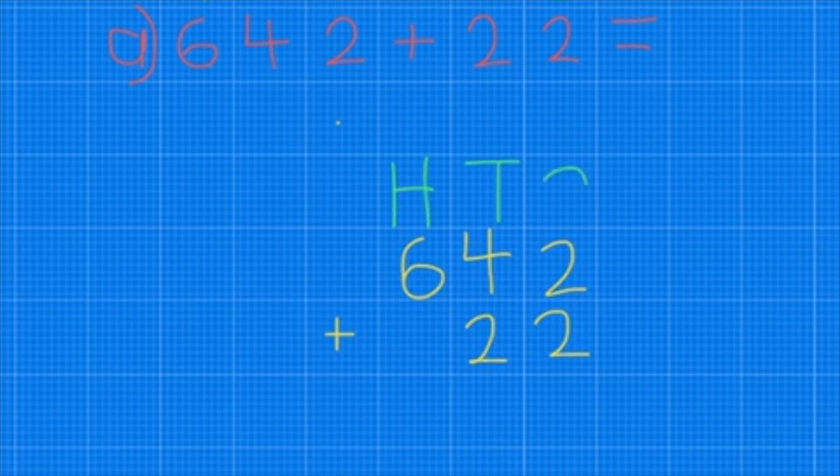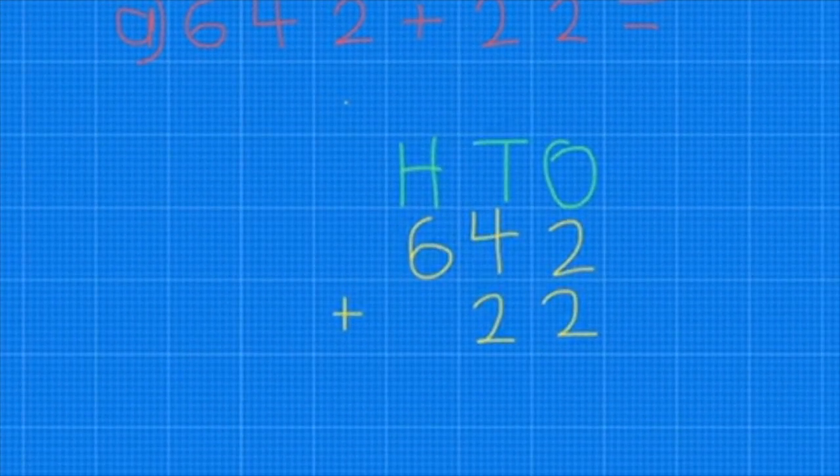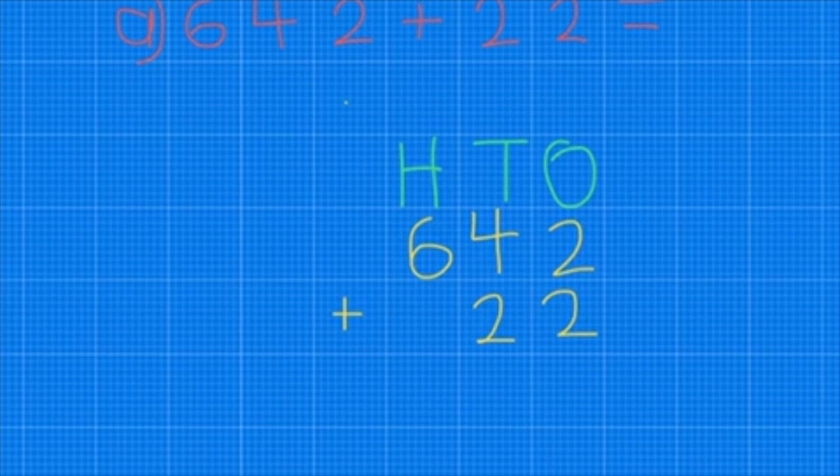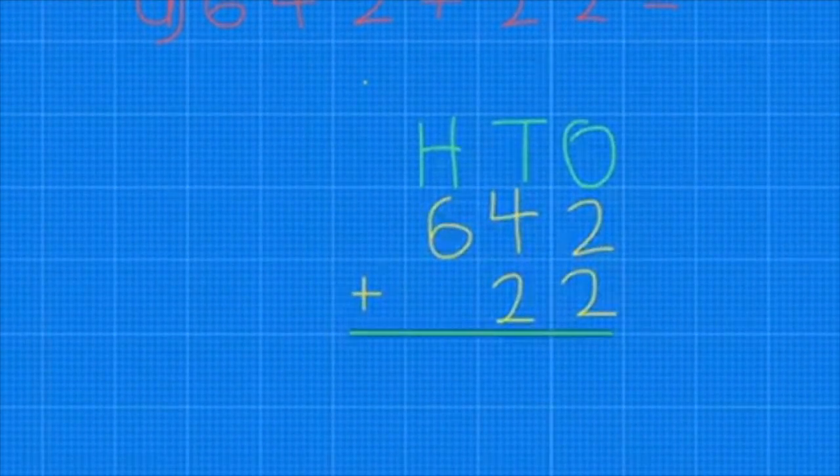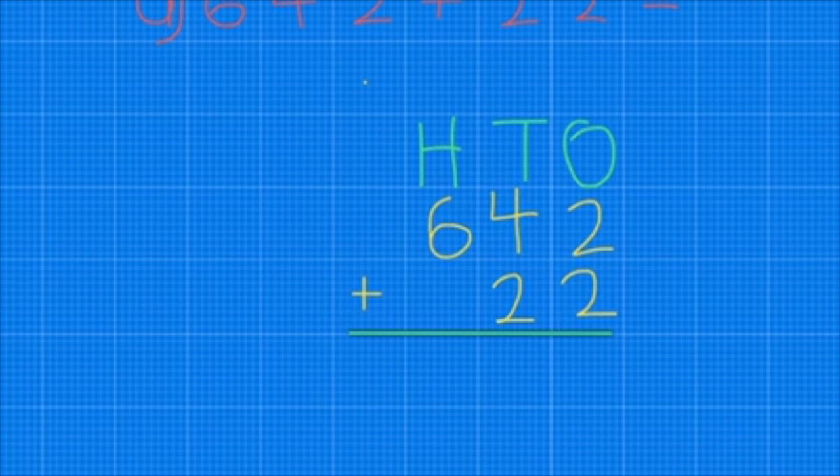Now I can put the HTO at the top just to make it clearer where my place value goes. I make sure the operation, which is the plus, minus, or times symbol, is there so I can see what I'm trying to work out. Then I need to do two straight lines underneath as equal signs, so I'm going to put my answer in between the two equal signs.